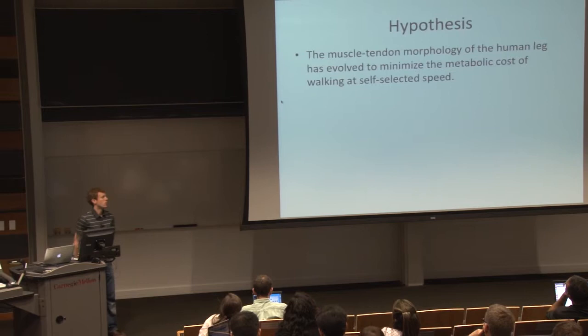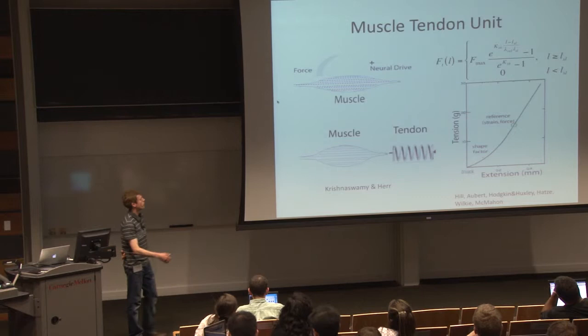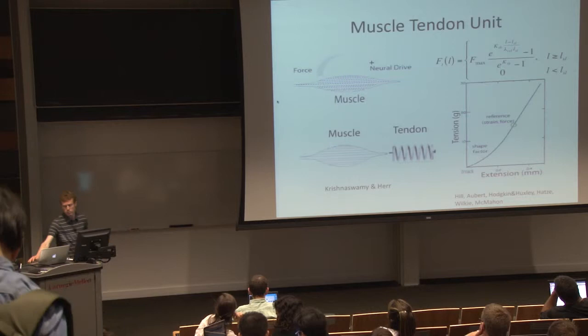What I'm going to do throughout this project is look at the properties of tendons and see if I can use that to back out the metabolic cost of walking as well as the muscle force and state. Just a quick recap: for any muscle in the leg or anywhere else in the body, there's a muscle and a tendon.